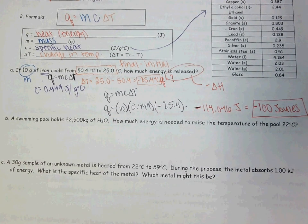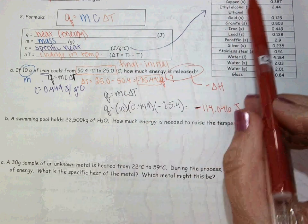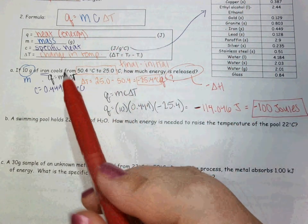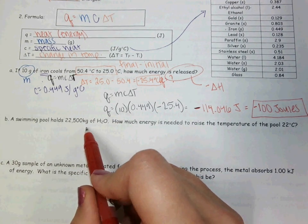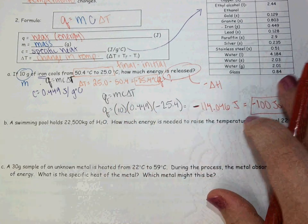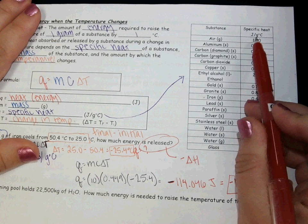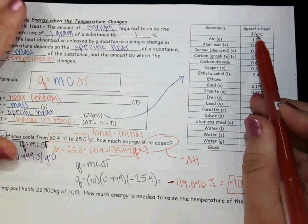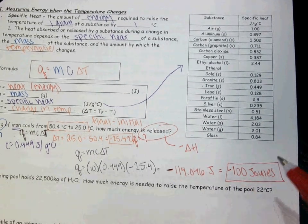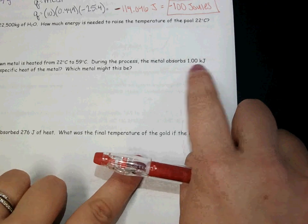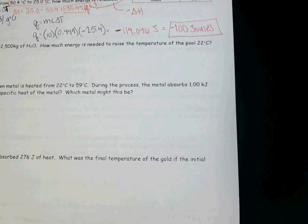Note the units for each of these. They need to be consistent in order to use this specific heat chart. So if I give you kilograms, that is an acceptable unit to use for mass in a lot of cases. However, in these types of questions, if we are using this specific heat value and it's joules per gram degree Celsius, that means my mass also needs to be in grams. So it's not okay to just plug in kilograms — I need to first convert to grams.